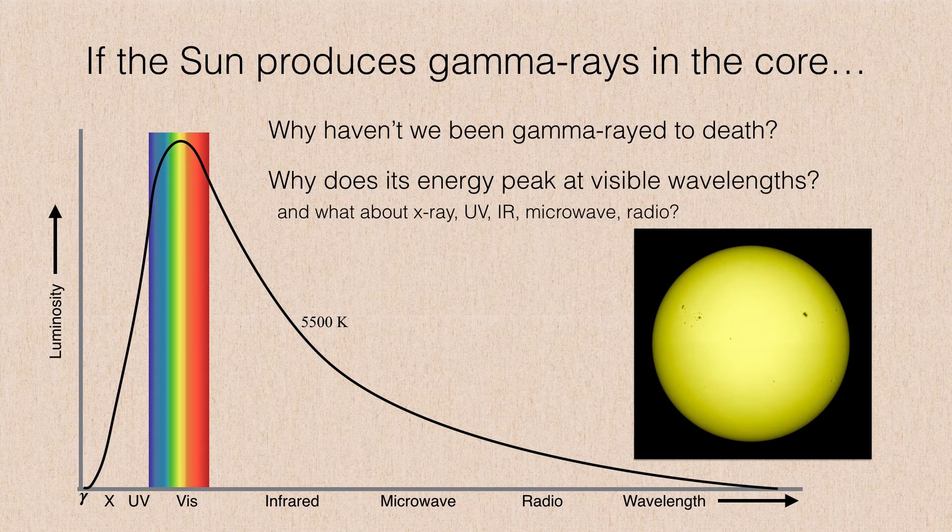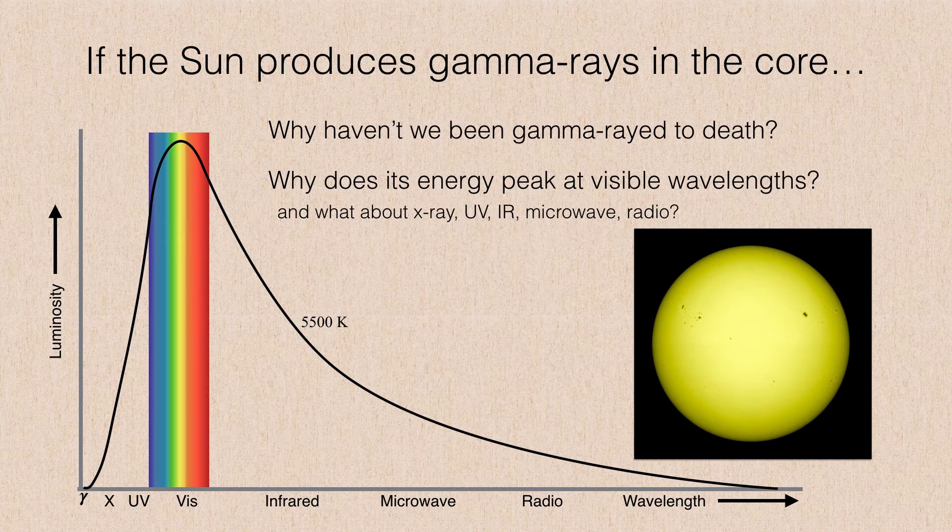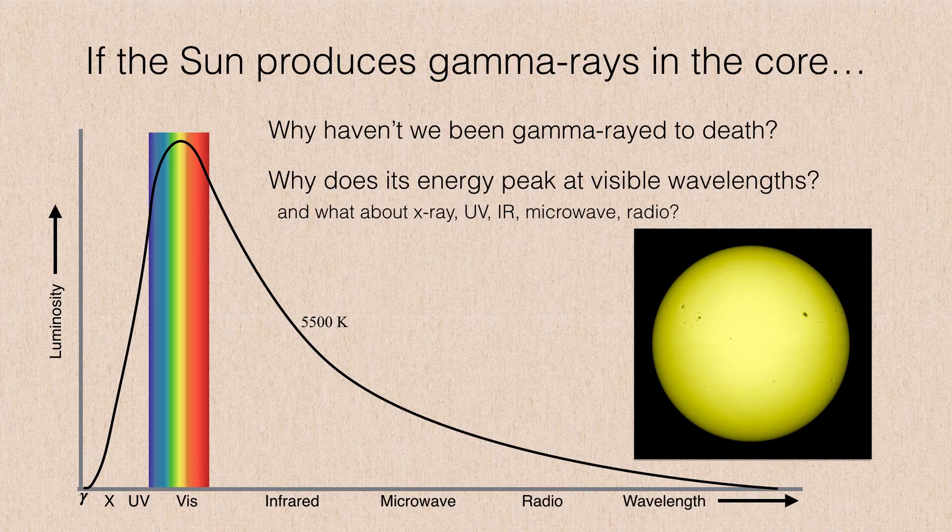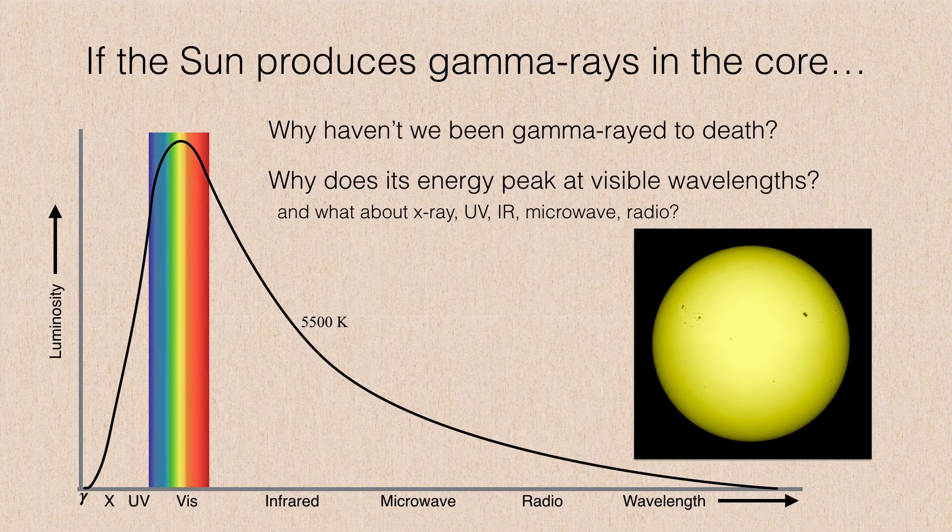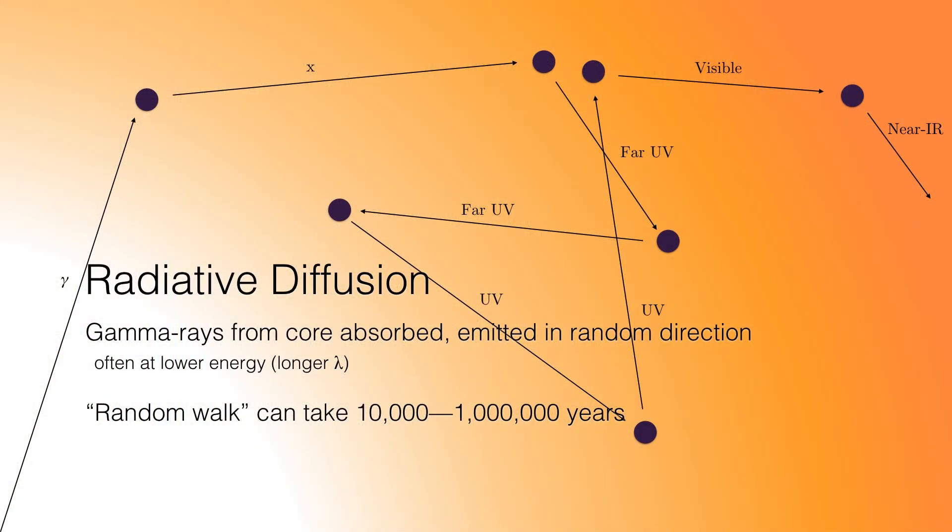If the sun is producing gamma rays in the core, why then does it radiate at all these other wavelengths? We should have been gamma-rayed to death a long time ago, and yet we get very few gamma rays from the sun. Most of the electromagnetic radiation generated by the sun is in the visible part of the spectrum. So what gives? Well, it is true that everything radiated from the core initially radiates as a gamma ray.